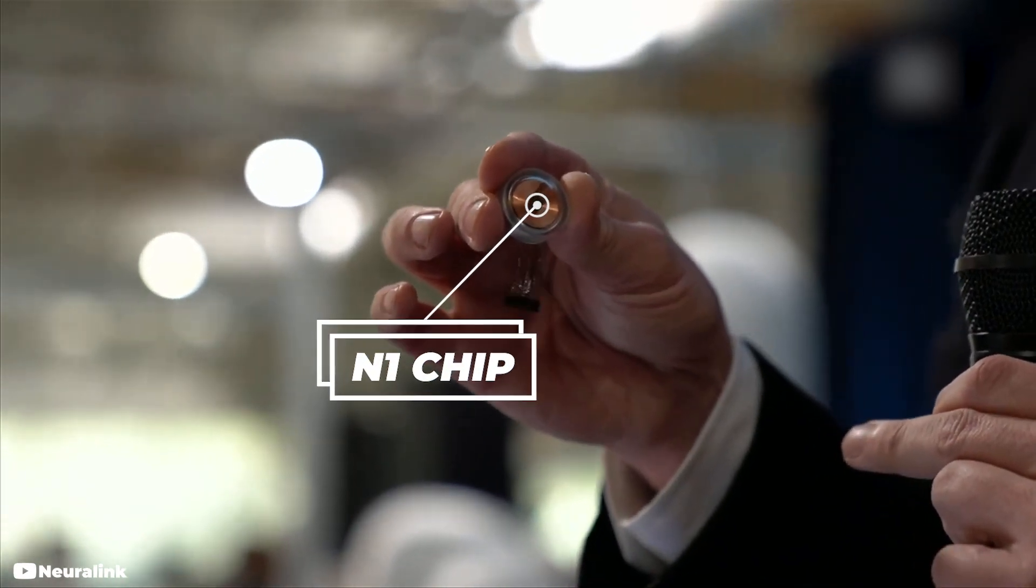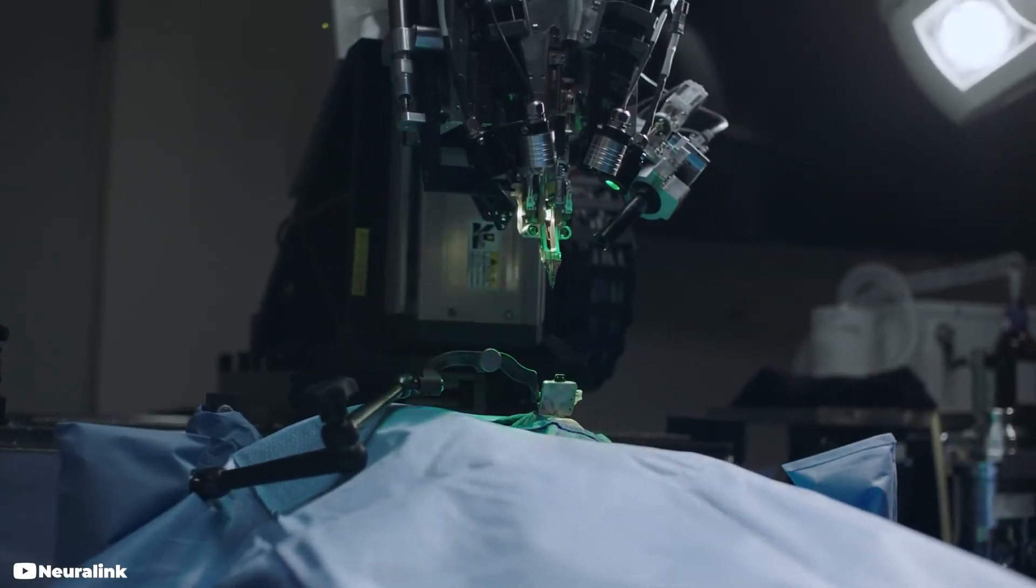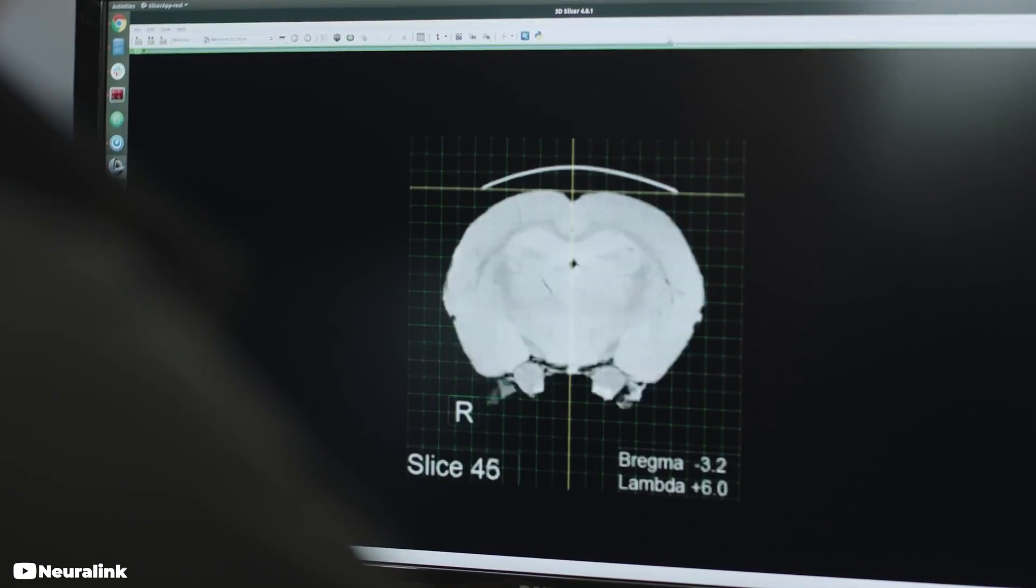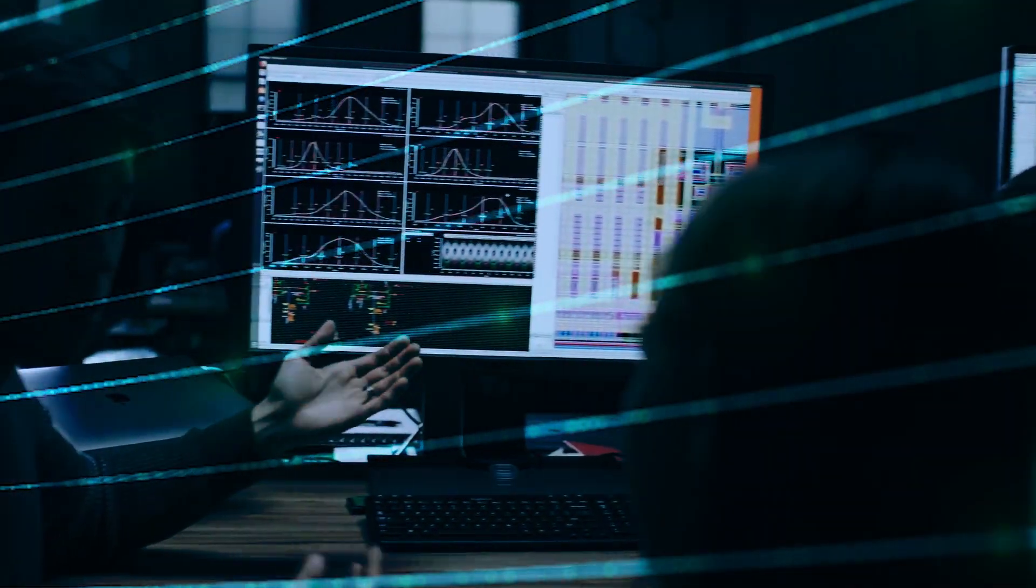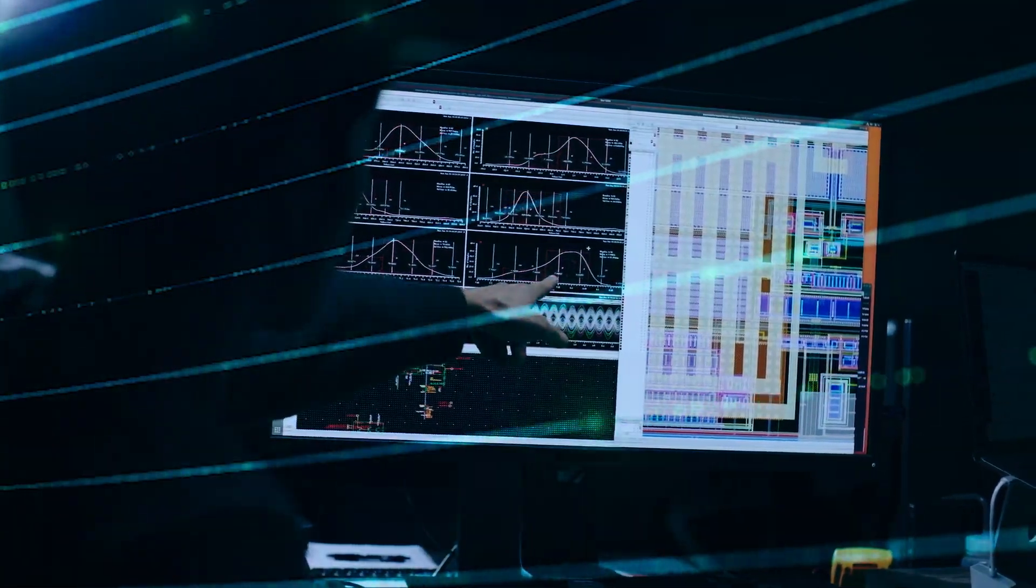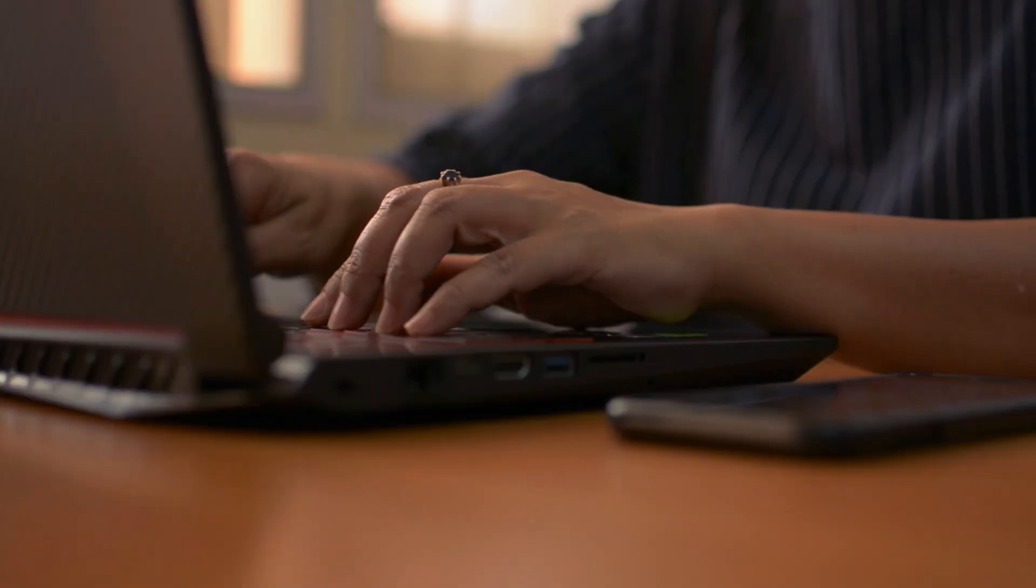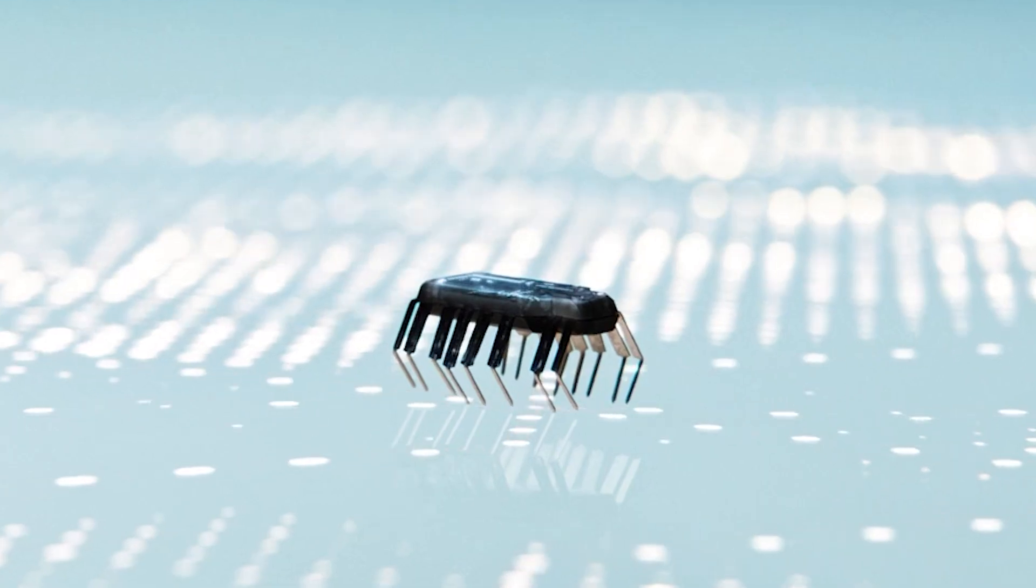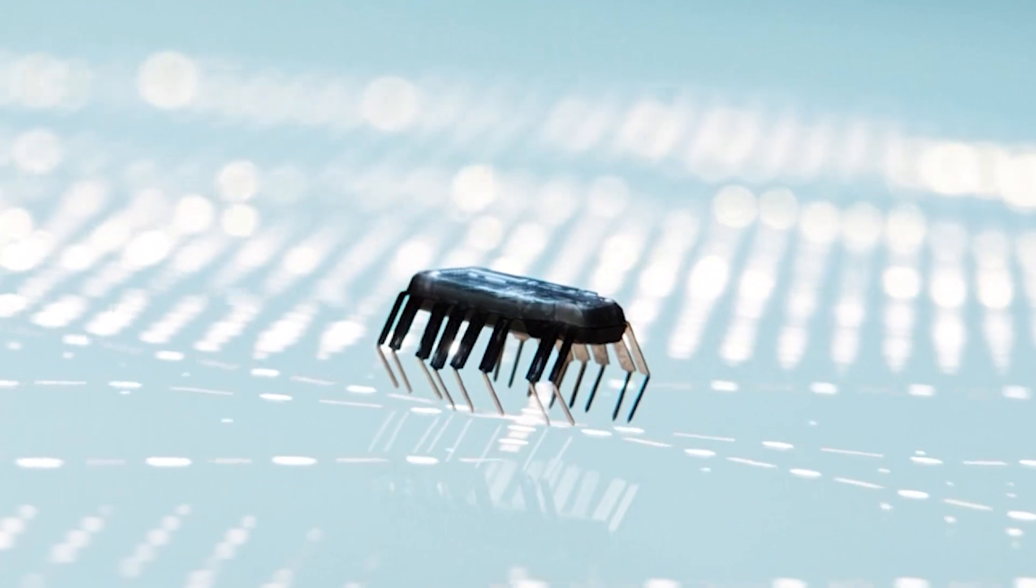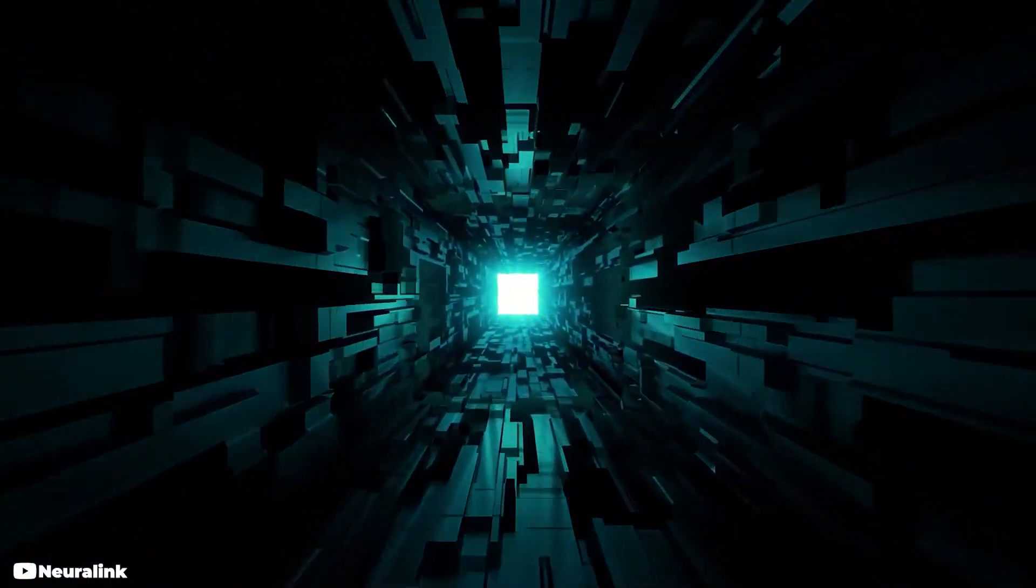The N1 chip is the heart of Neuralink, which is a custom-designed chip that acts as a translator between the human brain and the computer. The chip transmits the data wirelessly to computers, where researchers can study it. The device is fully implantable, cosmetically invisible, and designed to let you control a computer or mobile device anywhere you go. It would allow us to communicate with machines and even each other with unprecedented speed and precision.